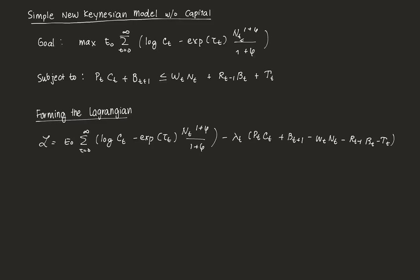In our model, there are infinitely many households, and the main objective of each household is to maximize their lifetime utility. This is the form of their lifetime utility — that's the objective — subject to some intertemporal budget constraint, which is this constraint here.